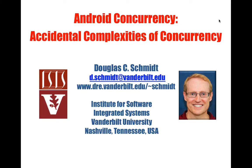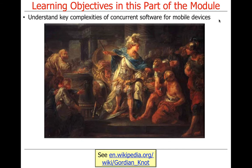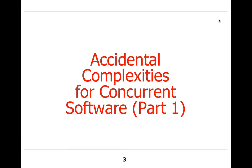We're going to start talking about complexities of threading. I just motivated some reasons why you would want to use threading - leveraging hardware and software advances, improving performance, improving responsiveness, and simplifying program structure. But there's also a dark side to this stuff. Even though some things may get simplified, other things become more complex. It's kind of like whack-a-mole: you whack the mole and it goes down in one place but pops up somewhere else. We're going to talk about what the complexities are in software and some ways you can address them.